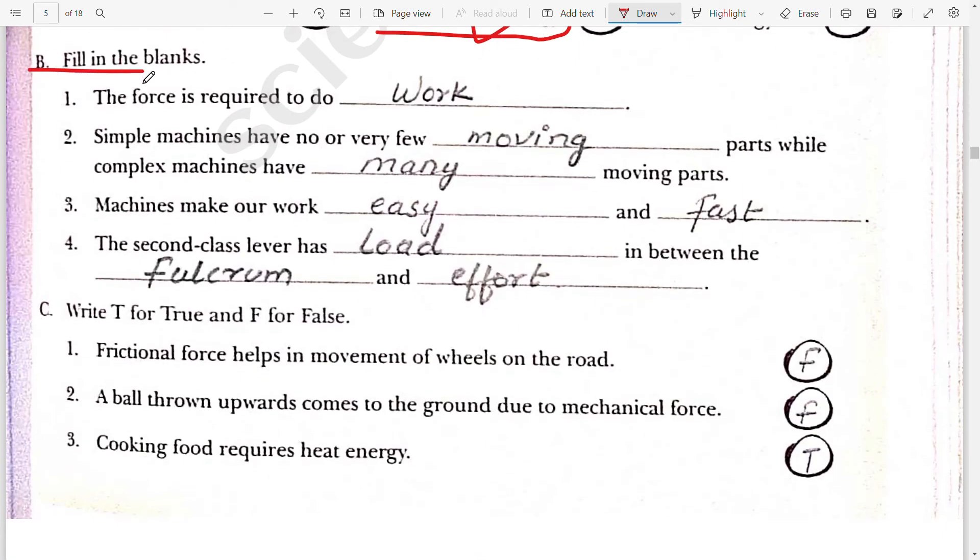Second question, fill in the blanks. First, the force is required to do work. Force is used to do some work. Second, a simple machine have no or very few moving parts, while a complex machine have many moving parts. Third, machine make our work easy and fast. You can also write easier and faster.